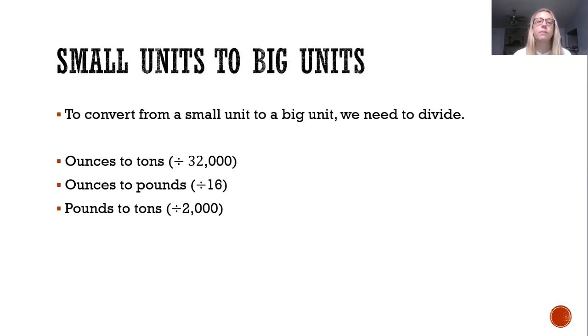Okay, what if we're going from a small unit to a big unit? If you're going from a small unit to a big unit you need to use division. So if you are going from ounces to tons you need to divide by 32. If you are doing ounces to pounds you need to divide by 16. If you are doing pounds to tons you're dividing by 2,000, and if you're doing grams to kilograms you're dividing by 1,000.